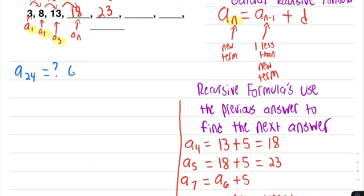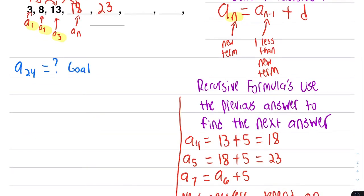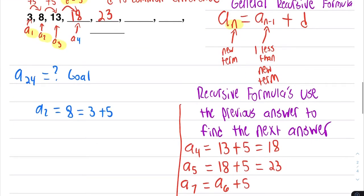So that's our goal, is to find A24. To find this new way, let's start with A2, which was 8. And how we got the number 8 was we took 3, and we added 5 to it. So that shows us how we got A2.